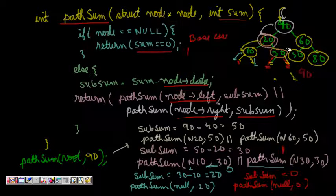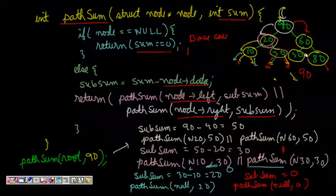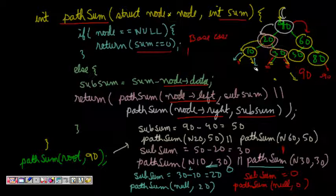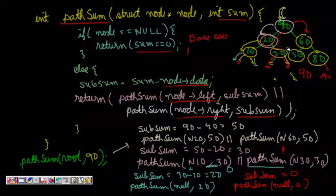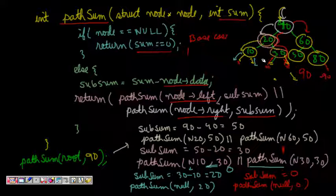We found one path with sum 90. It will also check the right child path but that sum will be negative, returning 0. So we found the path from root to the leaf node with sum equal to the given sum. I hope you understand this lecture and the problem. If you like this video, please subscribe to my YouTube channel and share with your friends. Thanks a lot.